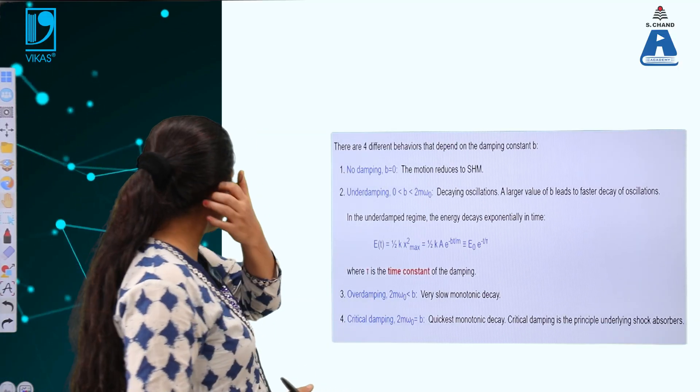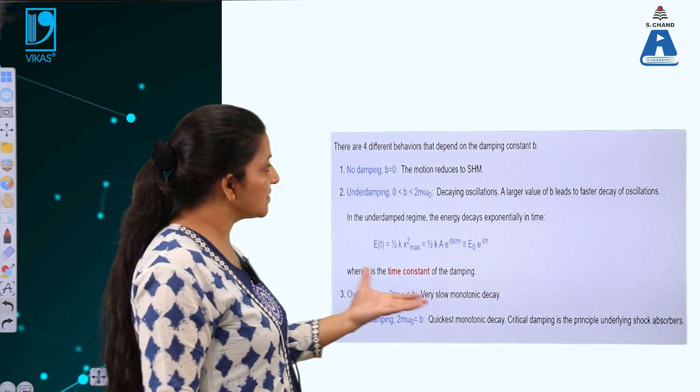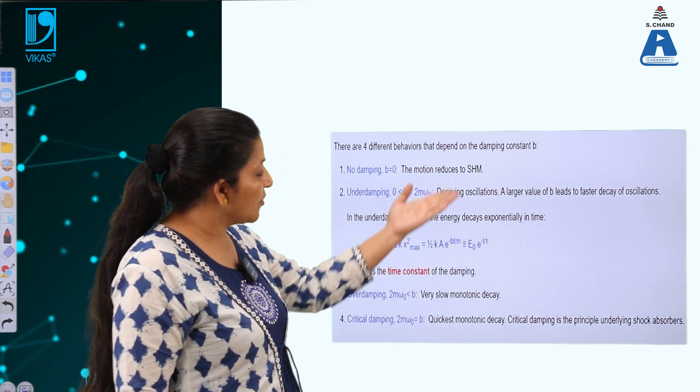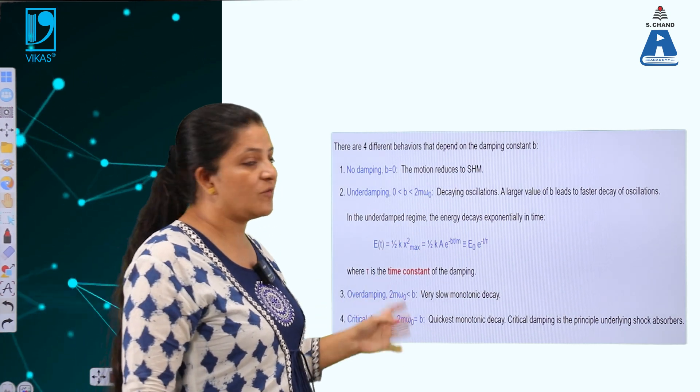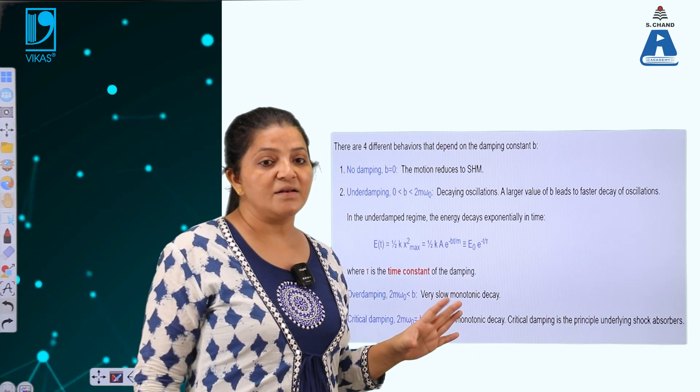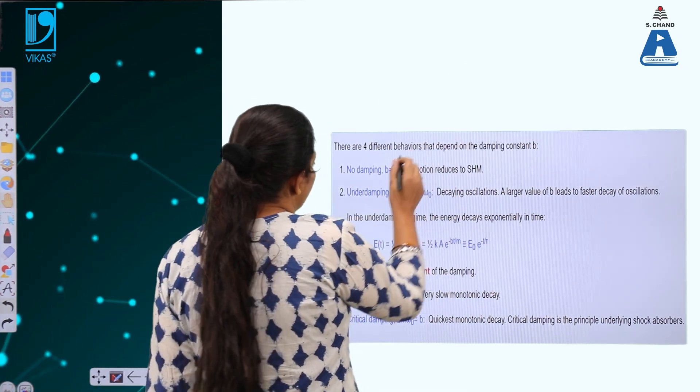Welcome back. I will now explain how, with different values of the damping factor b, the energy of the damped harmonic oscillator decreases with time. There are four different behaviors depending on the damping constant b, which acts in the opposite direction to the restoring force. Due to the damping force, the harmonic oscillator is termed a damped harmonic oscillator and its energy values decrease.